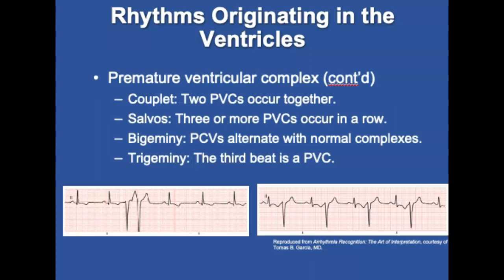PVCs can arise in the same ways as premature atrial and junctional complexes but most often originate from ischemia in the ventricular tissue. They are generally more serious than premature atrial or junctional complexes. Occasional PVCs are common and usually don't require treatment in otherwise healthy patients, but PVCs in patients with heart disease require close monitoring and a search for underlying causes.